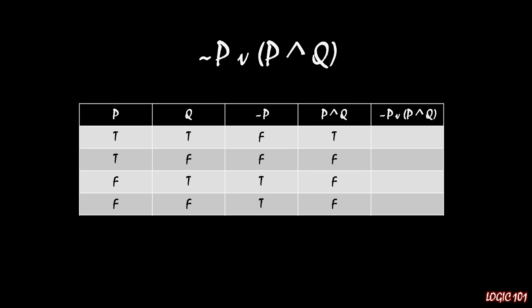And when that is true, then we'll put a true in the fifth column, and when that's false, we'll put a false in the fifth column. And so that's exactly what we do here. So you'll notice in the top row,